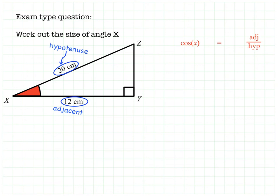And if we put in the information that we know, then cos of the missing angle X is 12 over 20, because 12 is the adjacent and 20 is the hypotenuse. 12 over 20 is 0.6, so cos X equals 0.6.